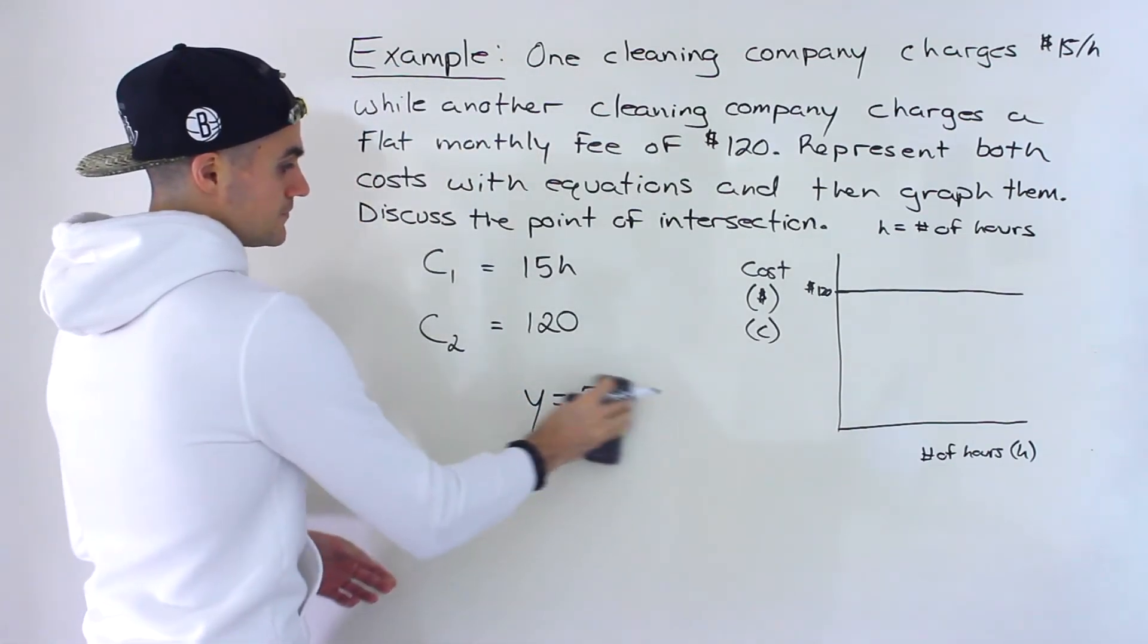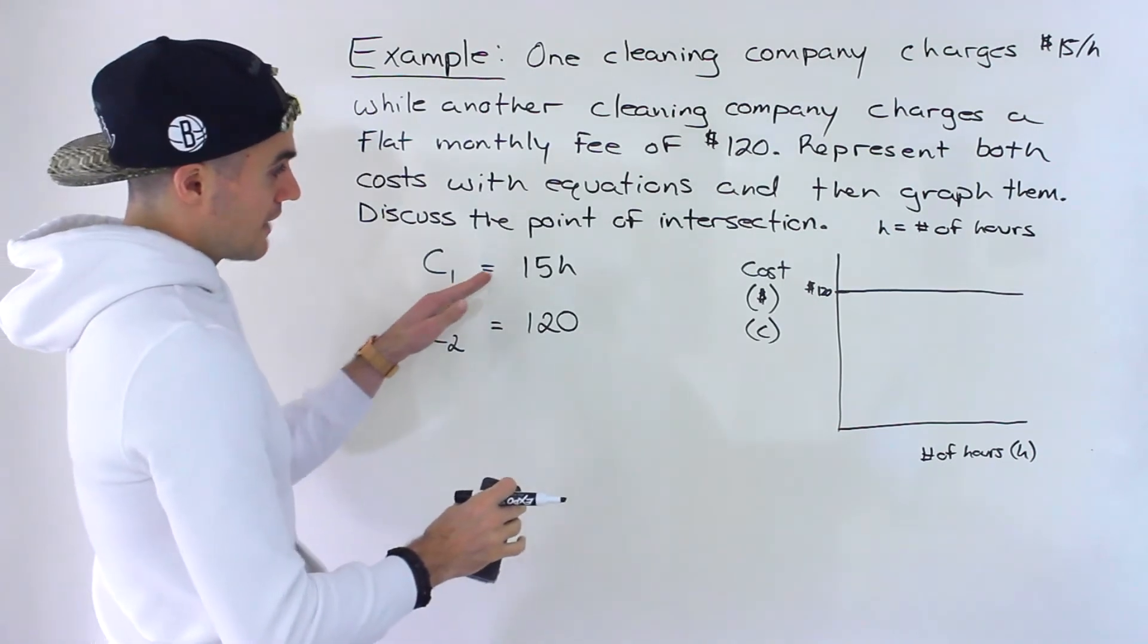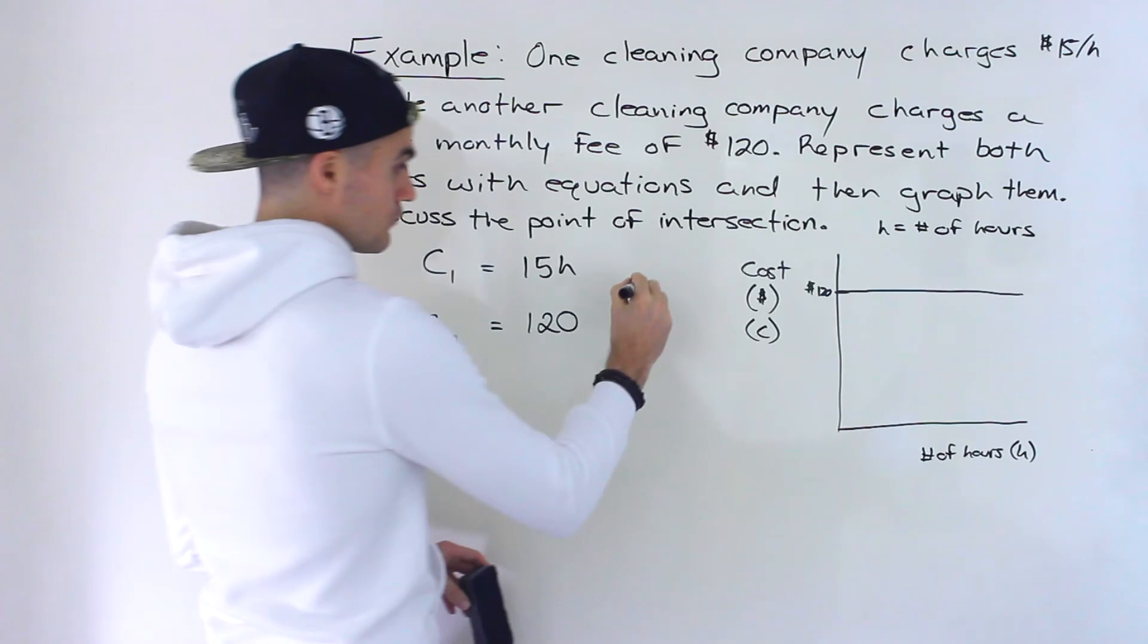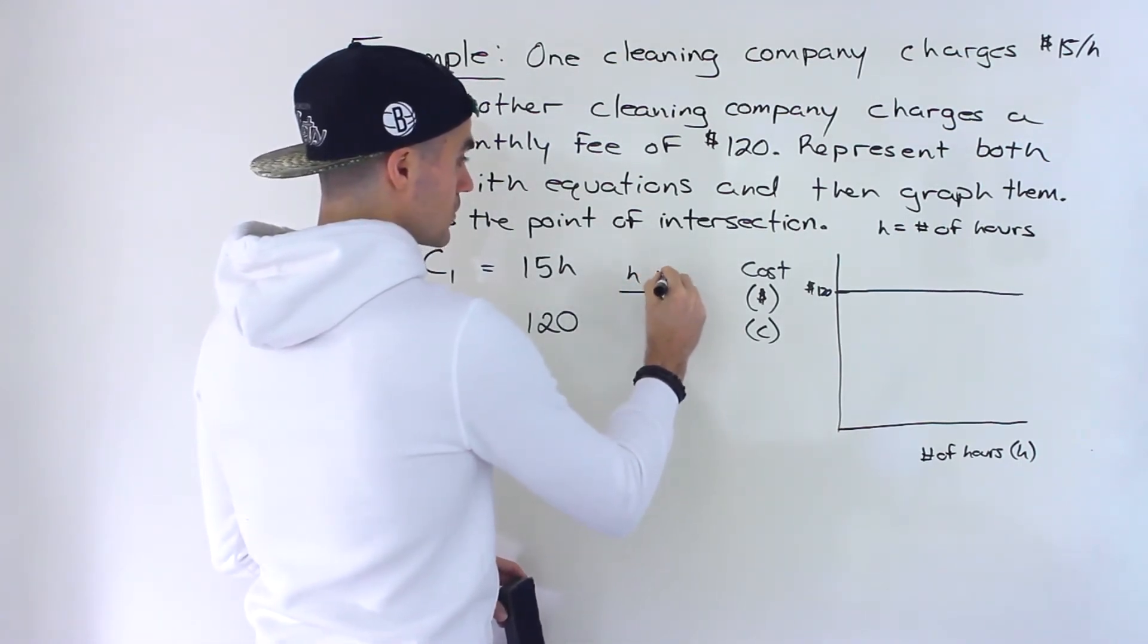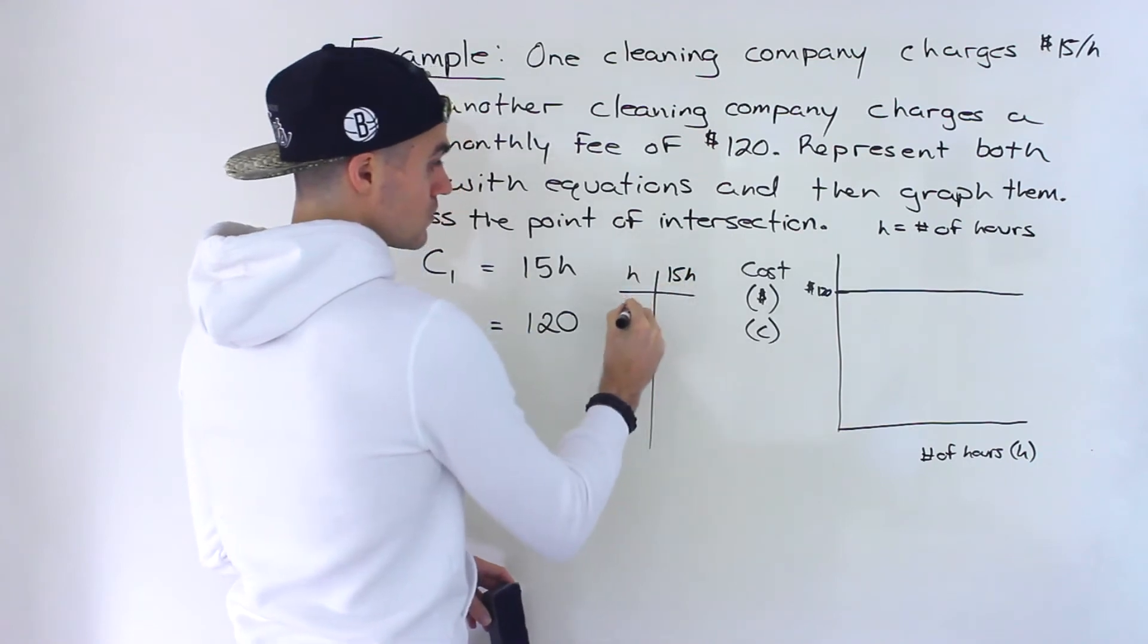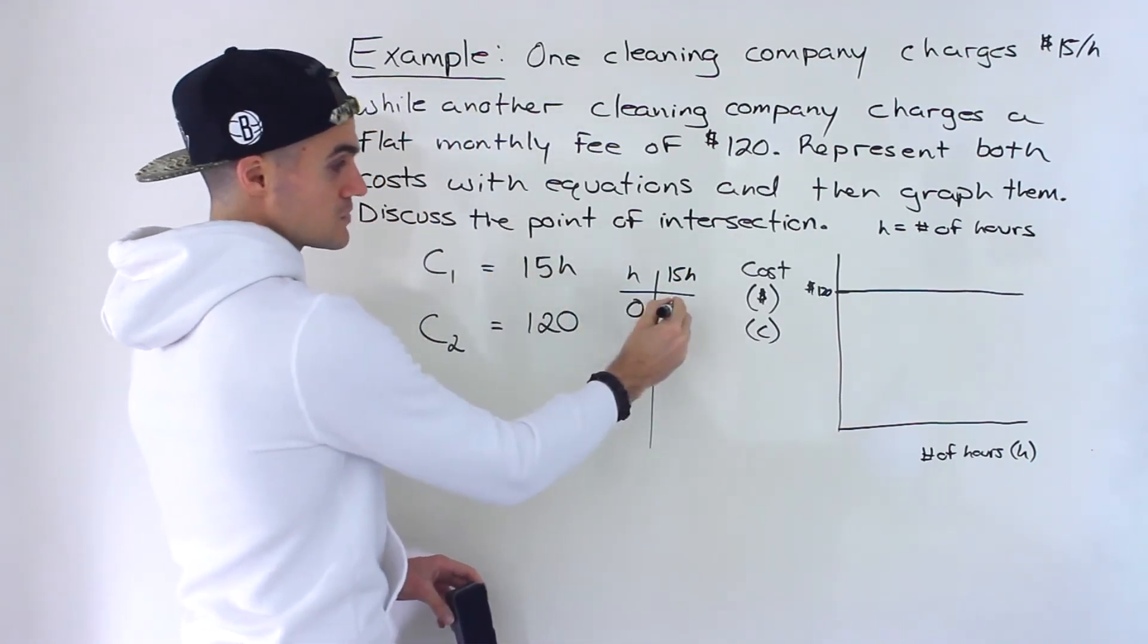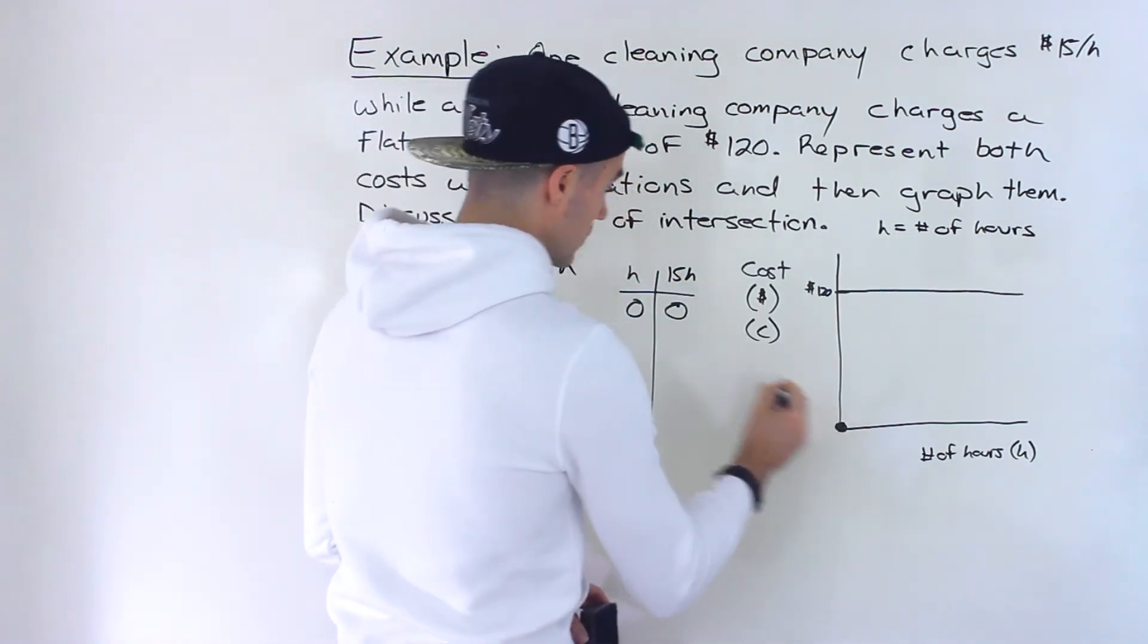And then this one, this one's going to have a certain slope because notice that, for example, at zero, if we make a table of value for this, so if we let this be hours and then this is going to be 15H. So if there's no hours of cleaning, then the C value is just going to be zero. 15 times zero is zero. So that's going to be over here.